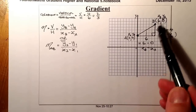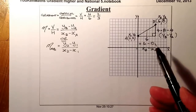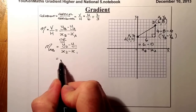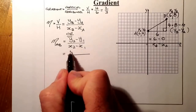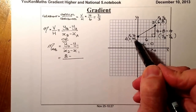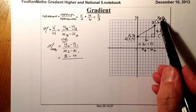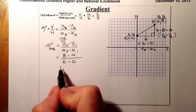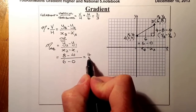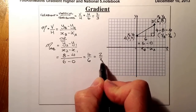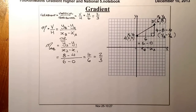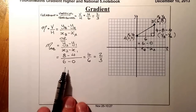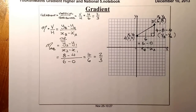So let's work out the gradient just knowing these two coordinates. Substituting in: y2 is 8, y1 is 4, x2 is 6, x1 is 0. That gives 8 minus 4 on top, which is 4, and 6 minus 0 on the bottom, which is 6. Simplifying gives 2 thirds. That's the method for working out gradient when given two coordinates — it's introduced in National 5 and used throughout Higher.